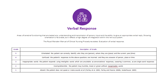A score of 3 is allocated for inappropriate words — the person responds using intelligible words which are unsuitable as conversational responses; swearing is common as are single-word responses. A score of 2 is allocated for incomprehensible sounds — the patient may mumble, moan, or groan without recognisable words. A score of 1 is allocated when the person does not speak or make sounds at all (absent). References: Farley et al. 2005, Farley and Pierce 2006, Waterhouse 2005.